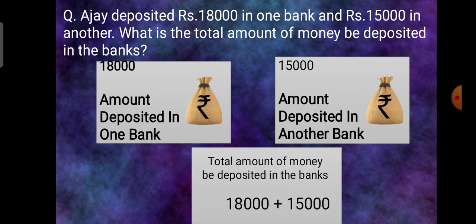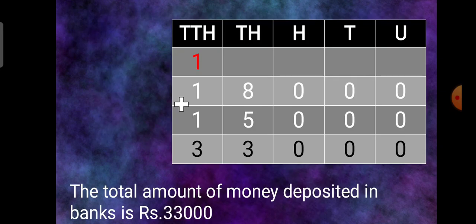Let's write the statement. Amount deposited in one bank 18,000. Amount deposited in another bank 15,000. Total amount of money he deposited in the bank 18,000 plus 15,000. Now let's do the working.